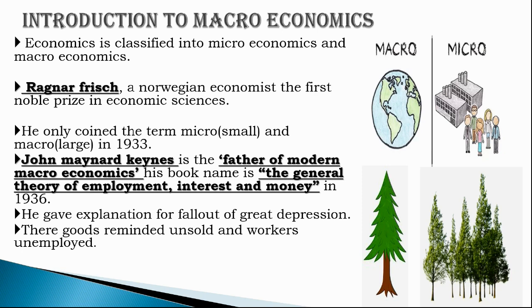Economics is classified into two branches: microeconomics and macroeconomics. Microeconomics deals with an individual or a single unit, whereas macroeconomics deals with the economy as a whole. For example, when we speak about a single tree, that is microeconomics; when we speak about many trees in the forest, that is macroeconomics.